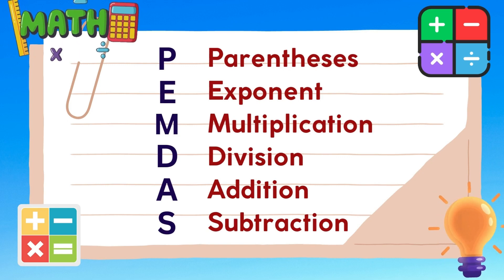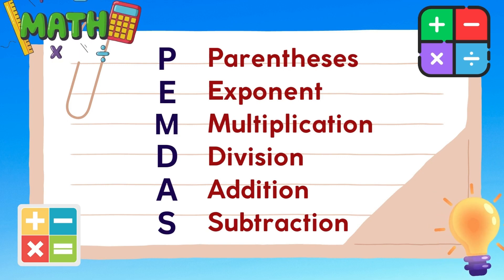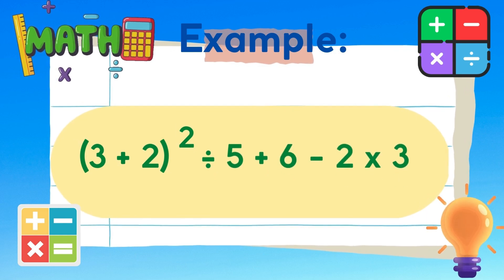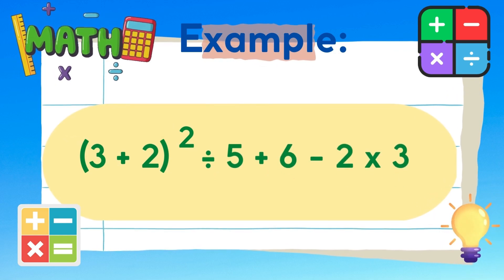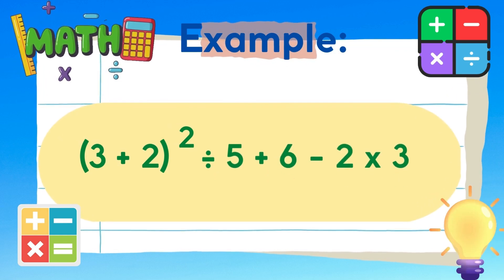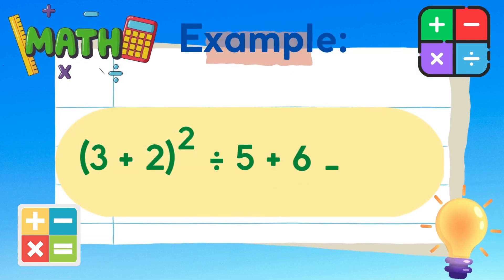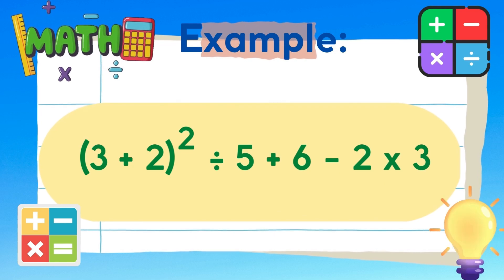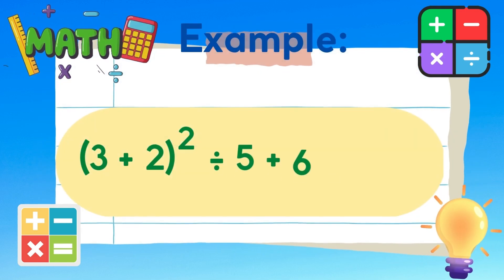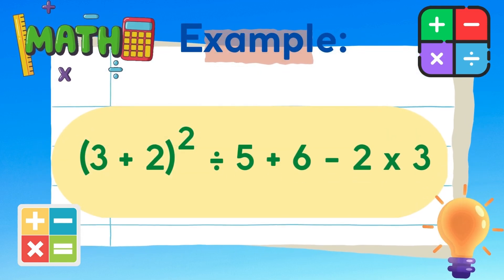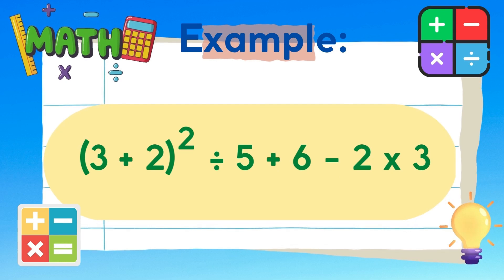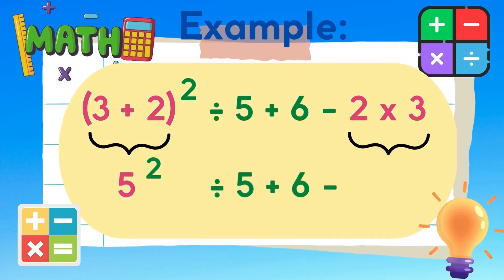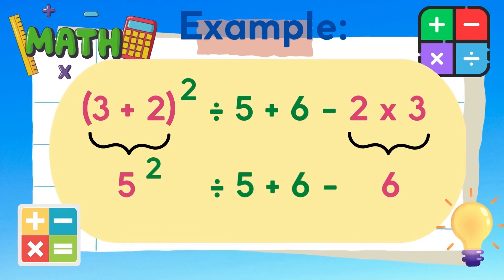Now let's have this example: the quantity 3 plus 2, raised to the power of 2, divided by 5, plus 6, minus 2 times 3. We need to add first 3 and 2, and multiply 2 and 3. So, 3 plus 2 is equal to 5, and 2 times 3 is equal to 6.